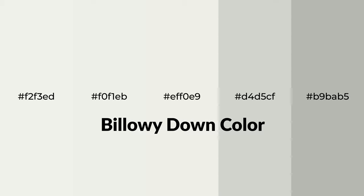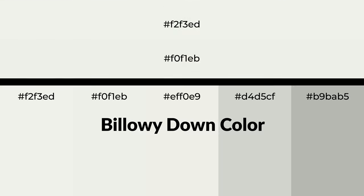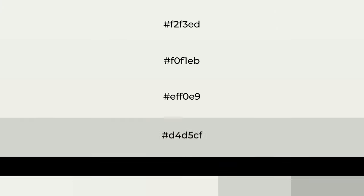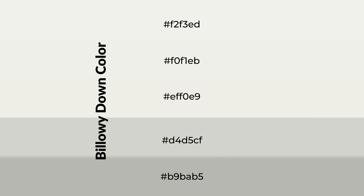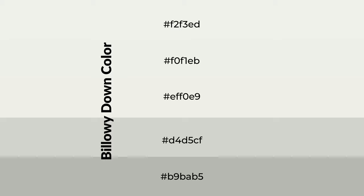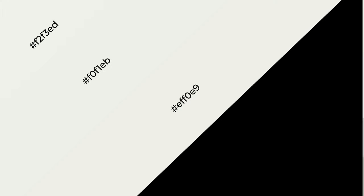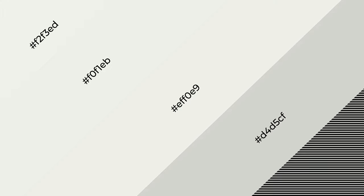Warm shades of billowy down color with gray hue for your next project. To generate tints of a color, we add white to the color. Tints create light and exquisite emotions. To generate shades of a color, we add black to the color, and it is used in patterns, 3D effects, and layers. Shades create depth and drama.